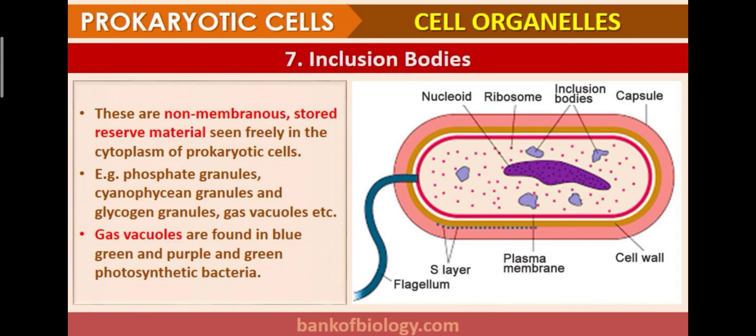That is enough for today's class. We covered prokaryotic cells and their cell organelles. In this chapter we will read about prokaryotic and eukaryotic cells, their organelles, characteristics, and functions — which we studied briefly in Class 9. You have to draw the diagram of prokaryotic cells and label it. See you all in the next class, thank you so much students.